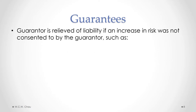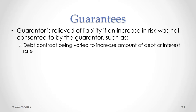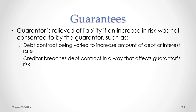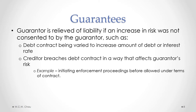A guarantor can be relieved of liability under a defaulted loan if they can show that there was an increase in the risk of default that was not consented to by the guarantor. This could include situations such as the loan being varied to increase the amount of debt or the interest rate without the guarantor's consent. Another situation where risk has been increased without consent is where the creditor breaches the debt contract in a way that affects the guarantor's risk — for example, where the creditor initiates enforcement proceedings before they are actually allowed to under the terms of the contract.